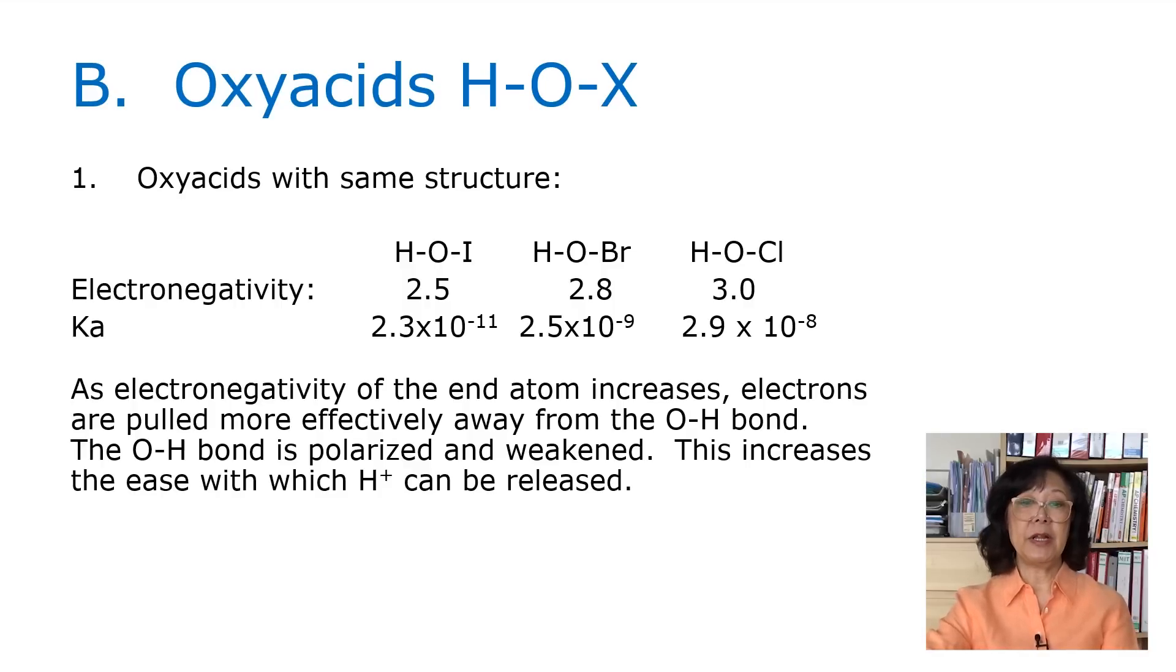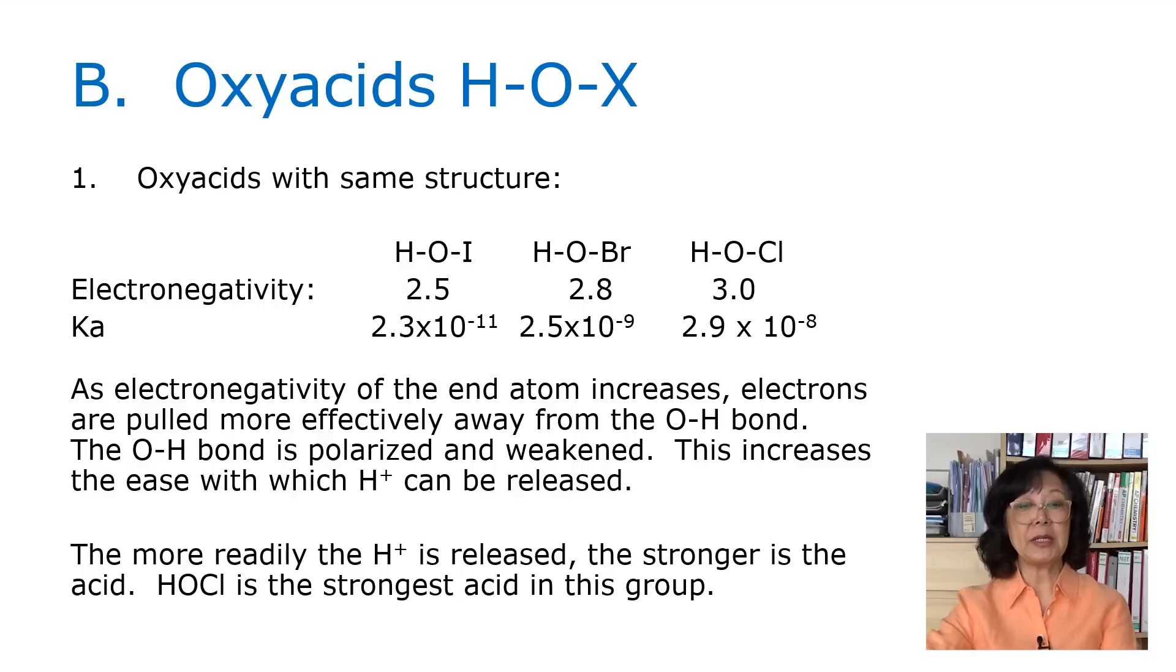As the electronegativity of the end atom, meaning the halogen atom, increases, electrons are now pulled more effectively away from the OH bond. The OH bond is polarized and weakened, and that increases the ease with which the hydrogen ion can be released. The more readily the hydrogen ion is released, the stronger is the acid, therefore making HOCl the strongest acid in the group. This is basically determined by electronegativity on the halogen atom.